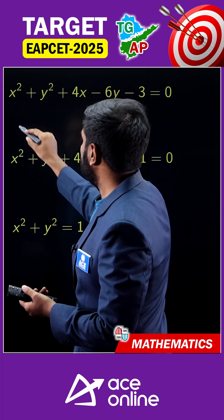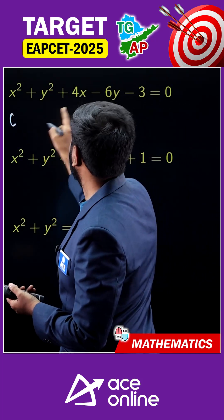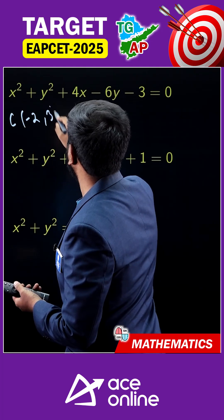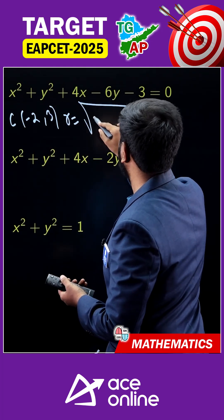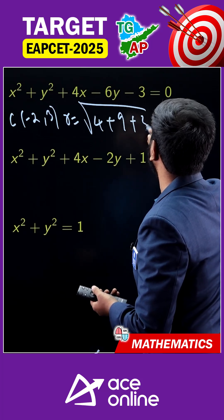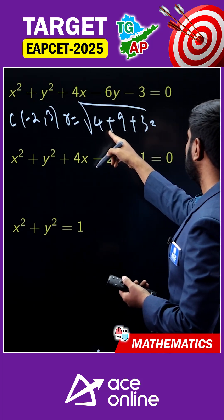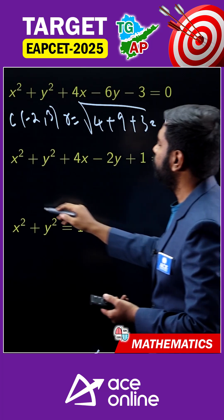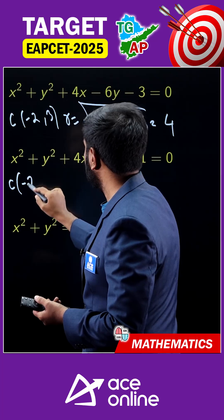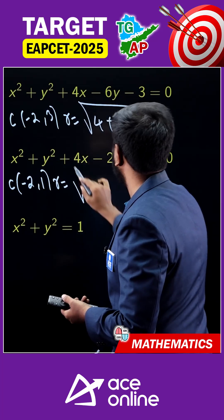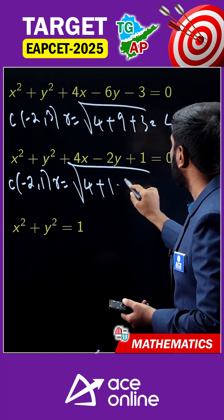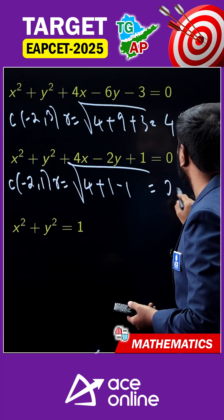For the first circle equation, the center is (-2, 3) and the radius: root of (g² + f²  - c) = root(4 + 9 - 3) = root(16 - 3) — wait, root 16 = 4. For the next circle, center is (-2, 1) and radius: root(g² + f² - c) = root(4 + 1 - 1) = root(4) = 2.